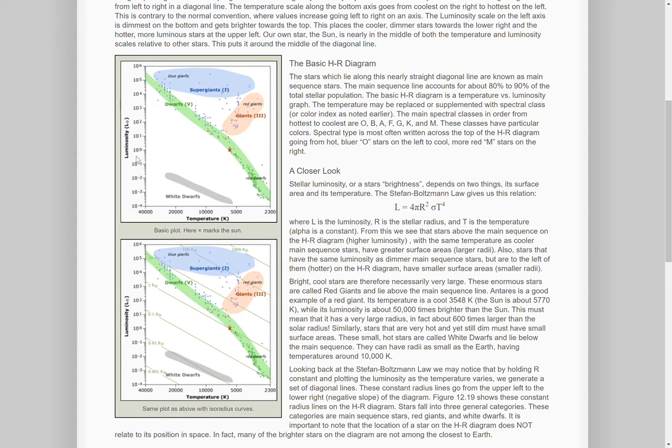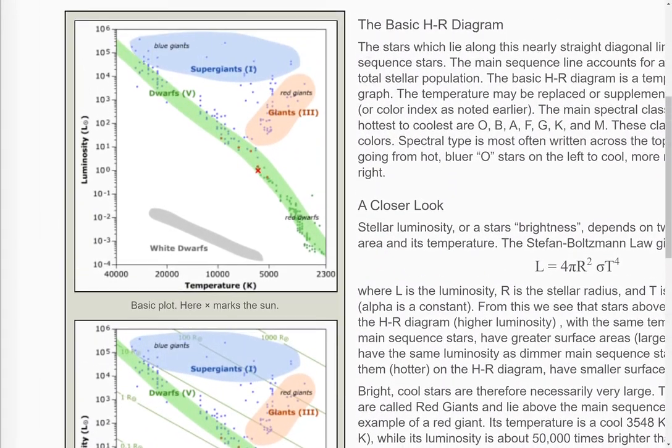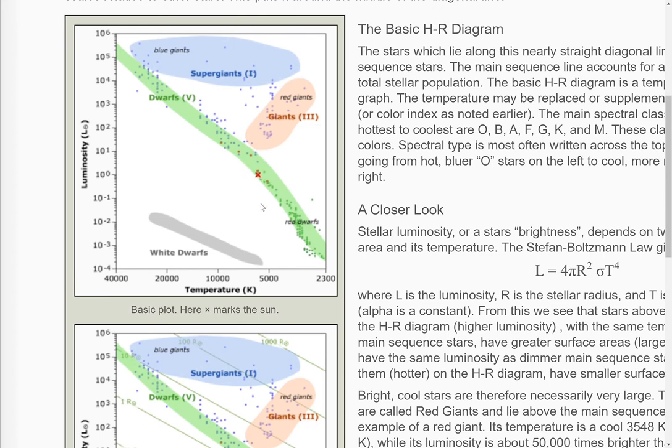So this is a way to classify stars. The vertical axis, notice that it has a logarithmic scale or exponential scale, whatever you want to call it, but 10 to the 0, 10 to the 1. Again this is one solar luminosity. So what this X represents right here is the Sun's placement. You can see then that the X also corresponds to over 5,000 Kelvin. That's our Sun's surface temperature.